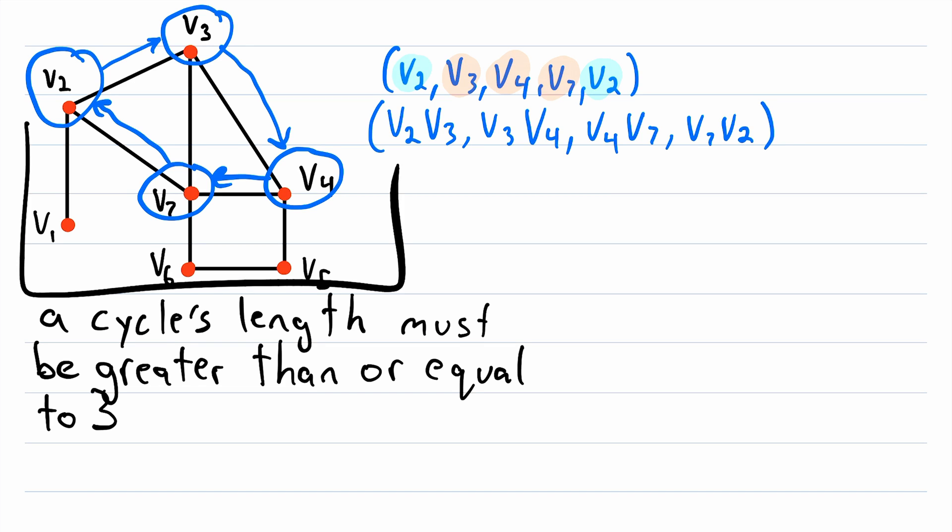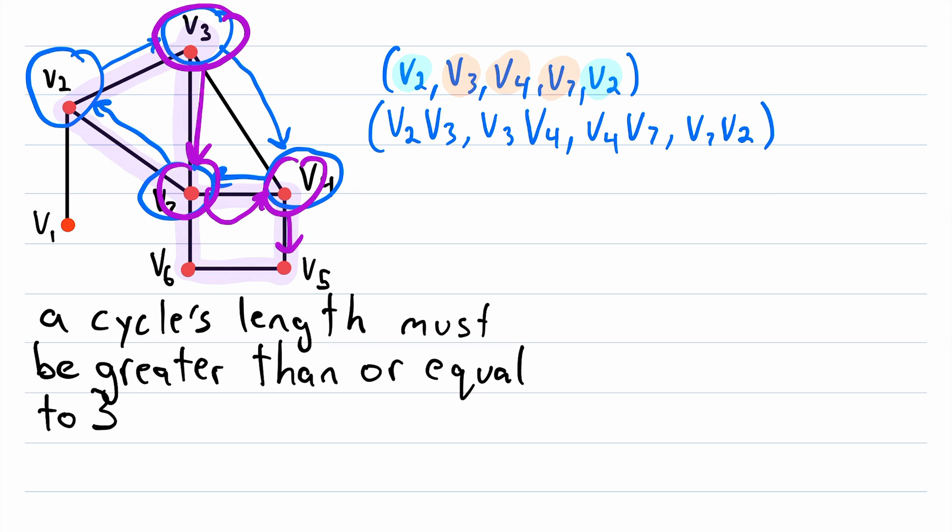So looking at this graph again, here's an example of a cycle that follows this slightly different definition that is sometimes used. This cycle goes from v3 to v7 to v4 to v5 to v6 back to v7 and then to v2 and then finishes at v3. I know it looks like quite a mess, but the point here is that a slightly different definition is sometimes used for the term cycle in which we can repeat vertices, but we still are not allowed to repeat edges.